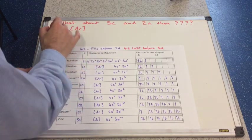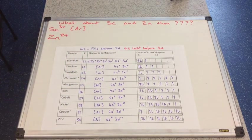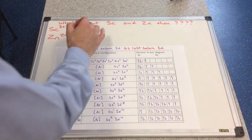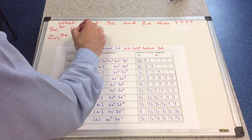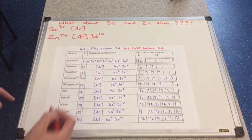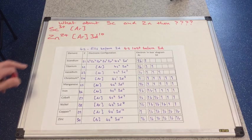And zinc, well, zinc only forms the zinc 2+ ion. So if we look at the configuration of zinc, argon 4s2, 3d10, we're going to lose those 4s2 electrons. So zinc 2+ configuration is argon 3d10. Well, that's full. It's not incomplete. And if that's the only ion that zinc will form, then zinc's not a transition element.